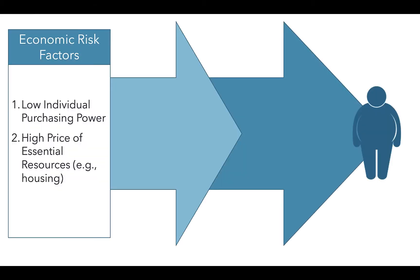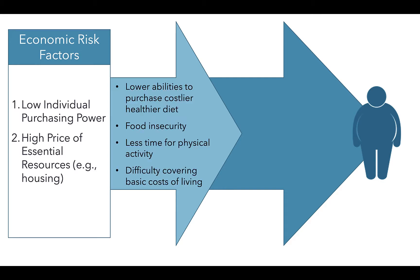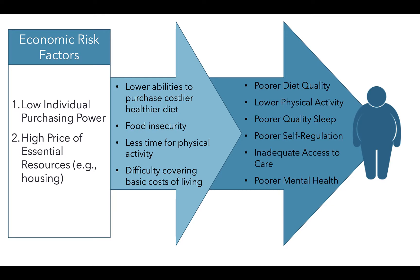When an individual experiences these economic risk factors — including low individual purchasing power and high price of essential resources such as housing and food — this leads to the mediating factors of lower abilities to purchase costly or healthy foods, food insecurity, less time for physical activity, and difficulty covering the basic cost of living and health care. This ultimately increases risk for the same poor health outcomes examined with social risk factors, and these subsequently increase risk for obesity.